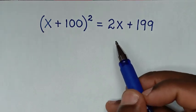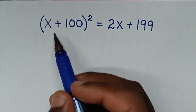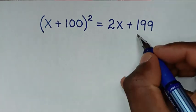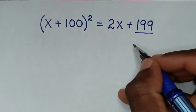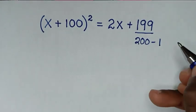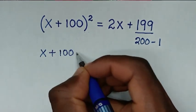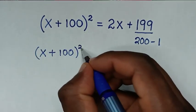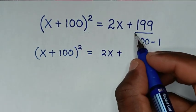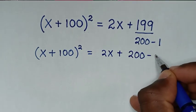First we'll start to deal with 2x + 199 to have a common factor inside the bracket which is x + 100. Now, 199 is the same as 200 minus 1, so we substitute 200 minus 1 for 199.